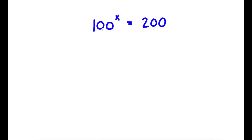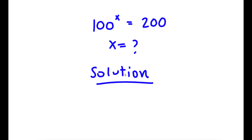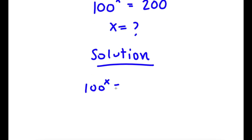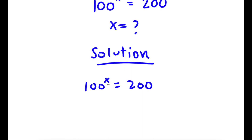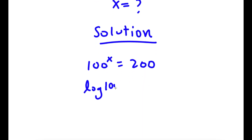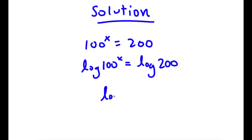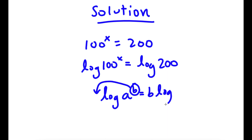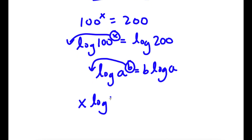In this problem, I have 100 to the power of x is equal to 200, and I'm going to find the value of x. I start with 100 to the power of x equals 200, then take the log on both sides: log of 100 to the power of x equals log 200. Using the power rule — log of a to the power of b equals b times log a — I move x to the front, giving x times log 100 is equal to log 200.